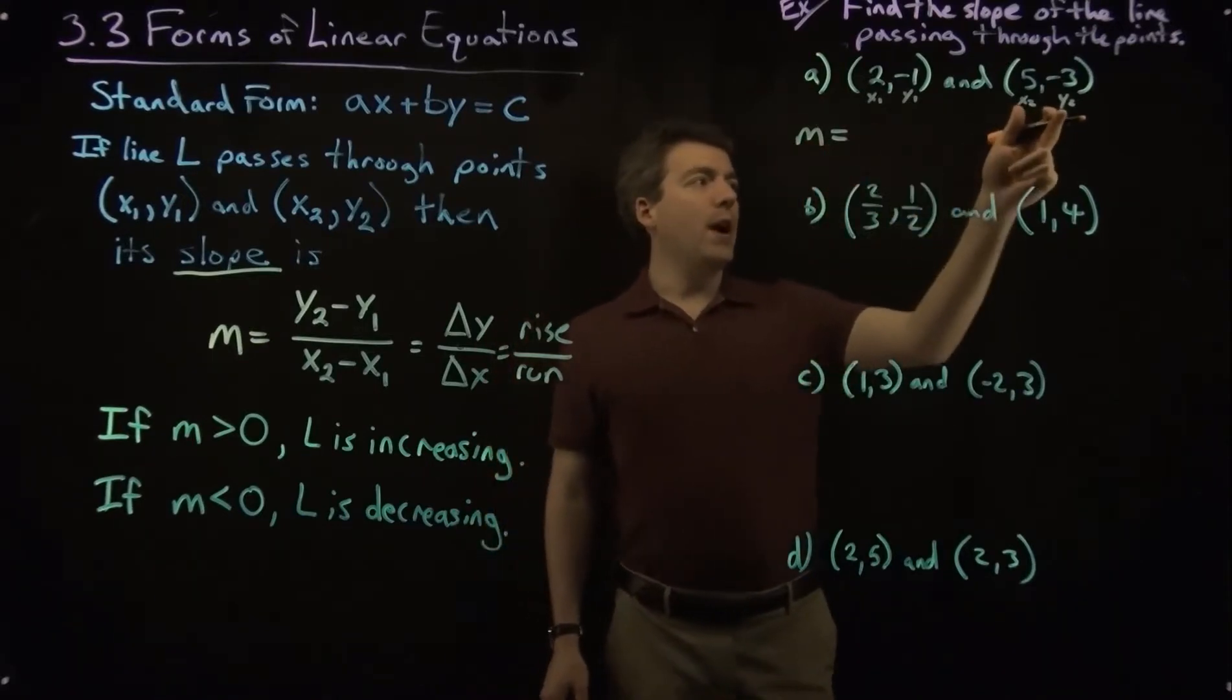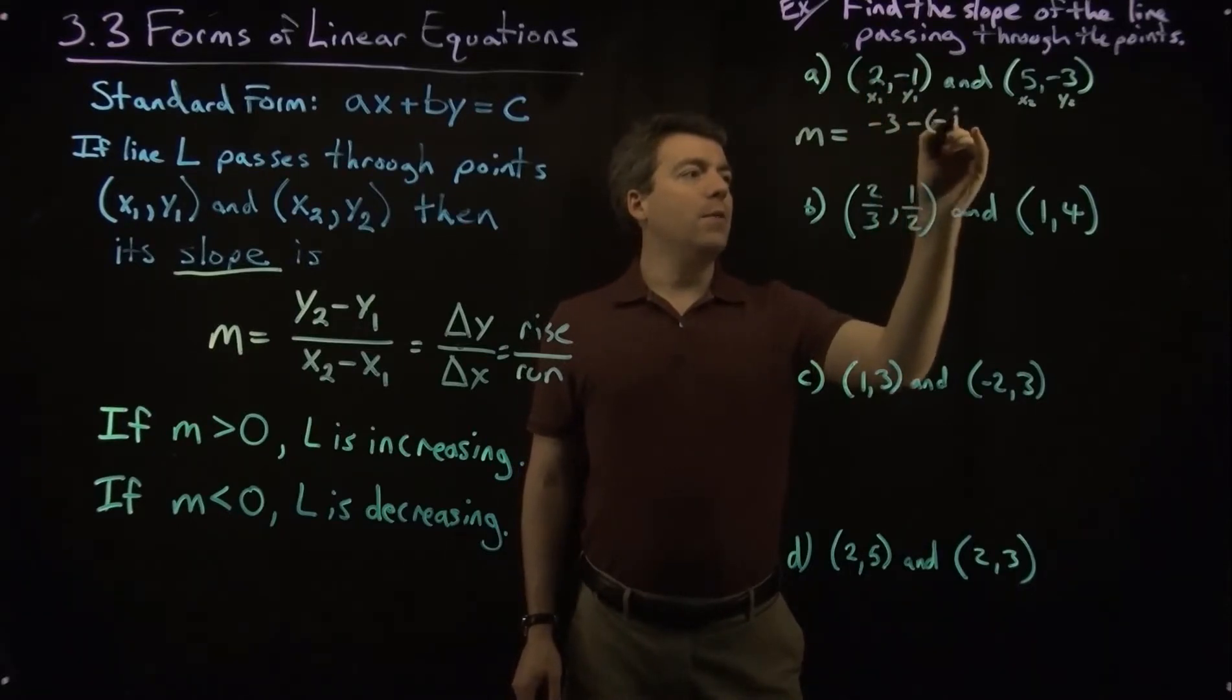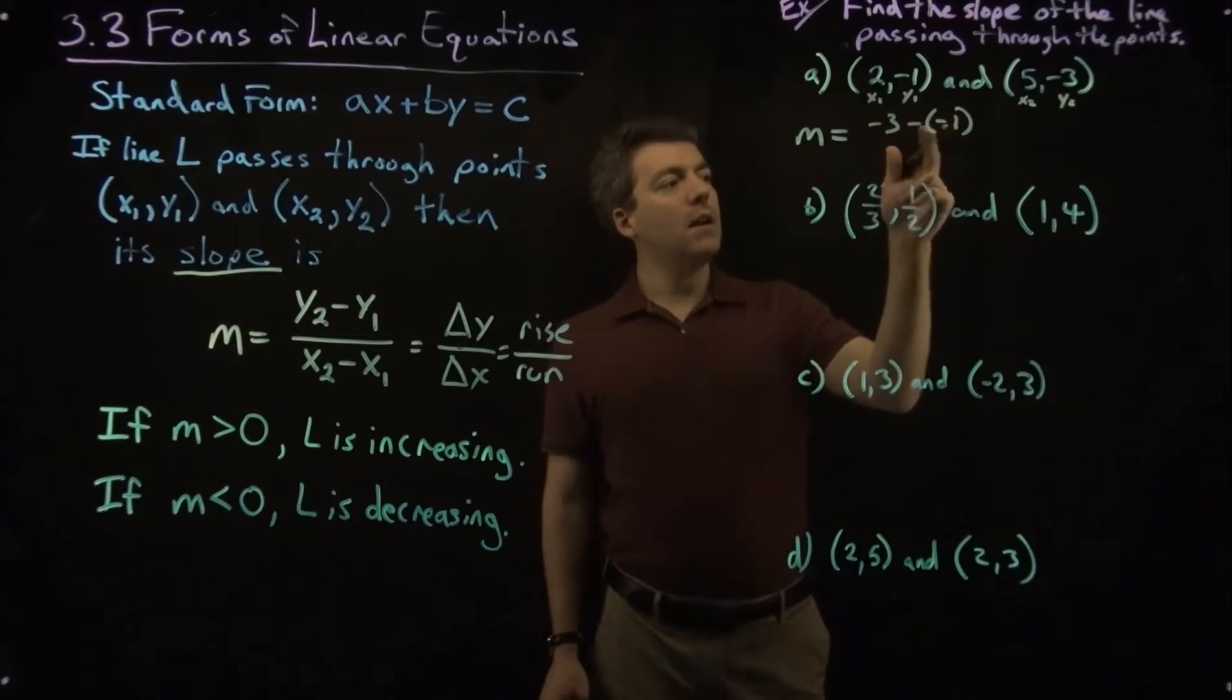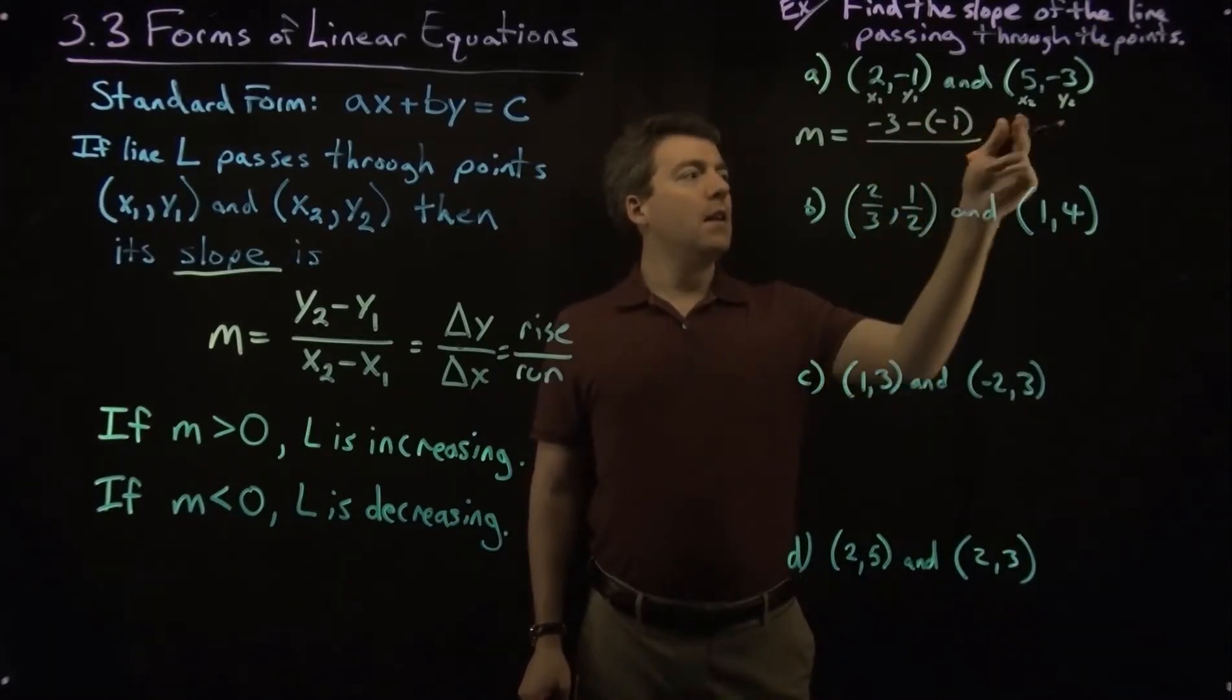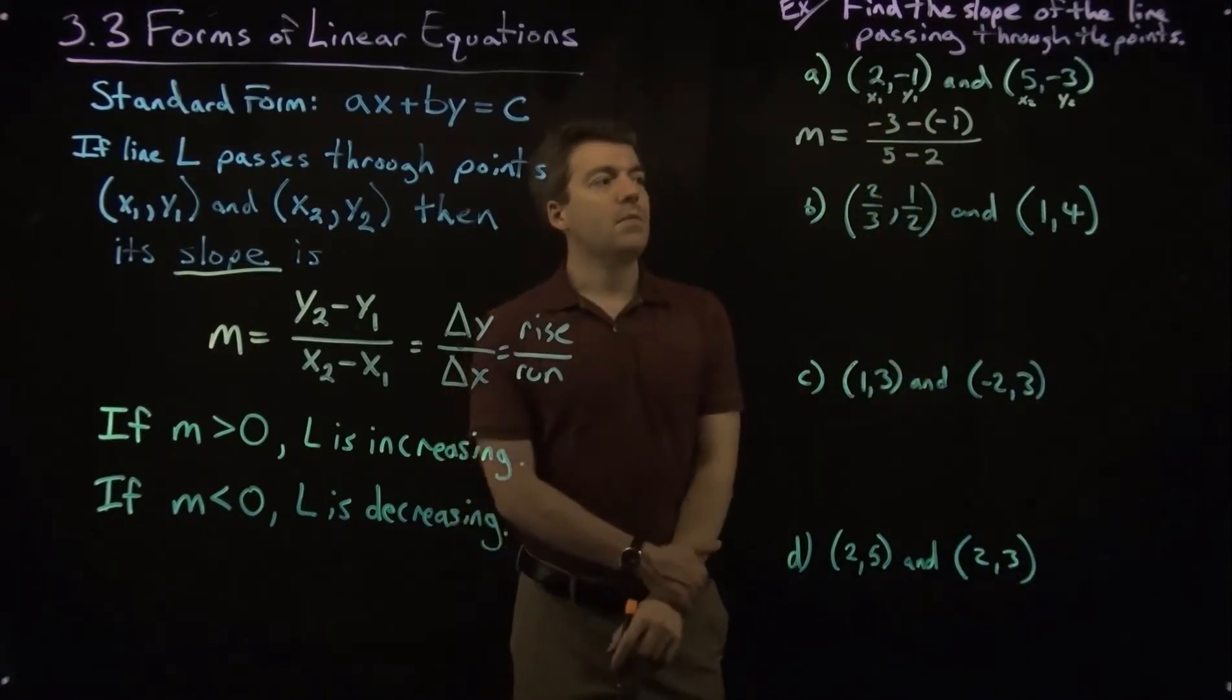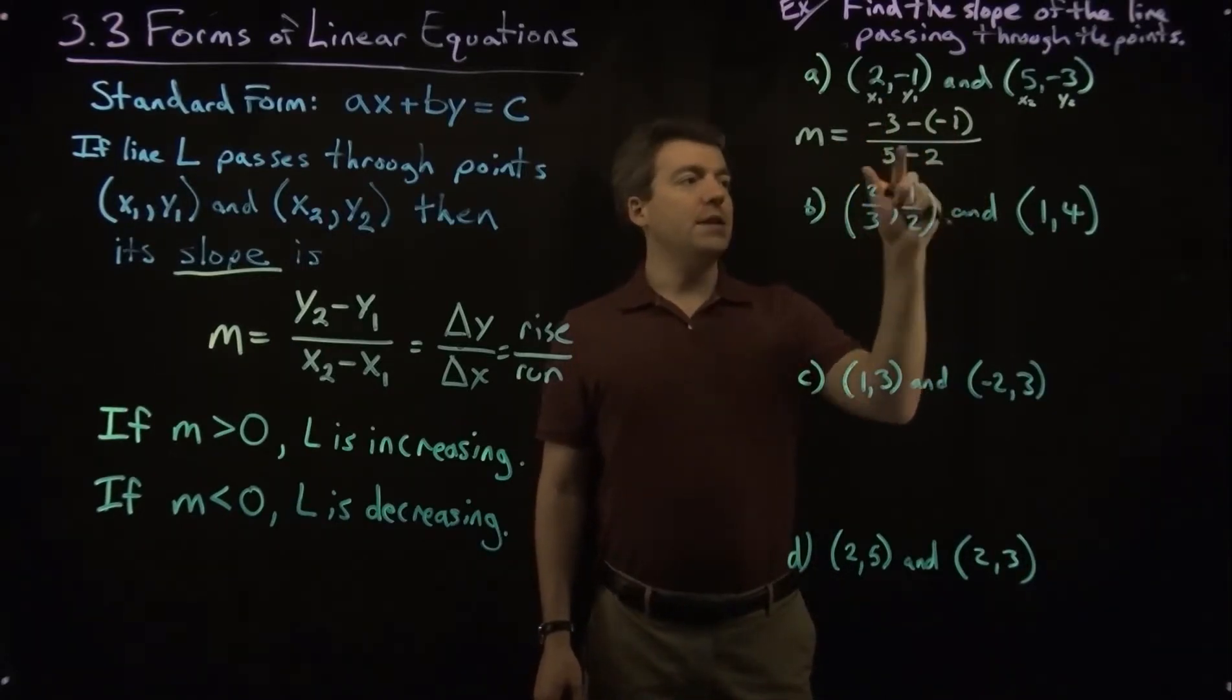All right, so the slope is going to be y2, so negative 3, minus y1, negative 1. And since that's negative, I'm going to put it in parentheses. Divide by x2, which is 5, minus x1, which is 2. All right, so negative 3, minus negative 1. So y2, minus y1, over x2, minus x1.